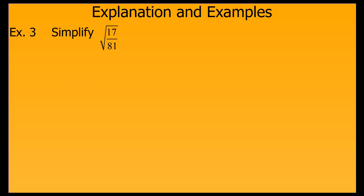This example includes a quotient. So we split it into the square root of the numerator divided by the square root of the denominator, which leaves us with the square root of 17 divided by 9. This is simplified form since 17 does not have any perfect square factors, does not have a fraction in it, and does not have a radical in the denominator.